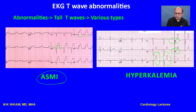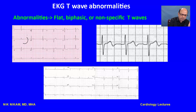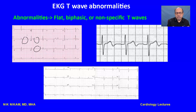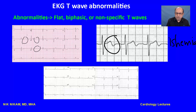Now the third category: flat T waves, biphasic T waves, or non-specific ST-T changes. Flat T waves represent hypokalemia or hypothyroidism. Whenever you see a patient with low QRS voltage along with flat T waves, always think about hypothyroidism — you could also see this in large pericardial or pleural effusions. Biphasic T waves, if seen in the anterior leads V1, V2, V3, suggest ischemia. Non-specific T wave changes don't signify any major underlying pathology — they are just abnormal without pointing to a specific diagnosis.